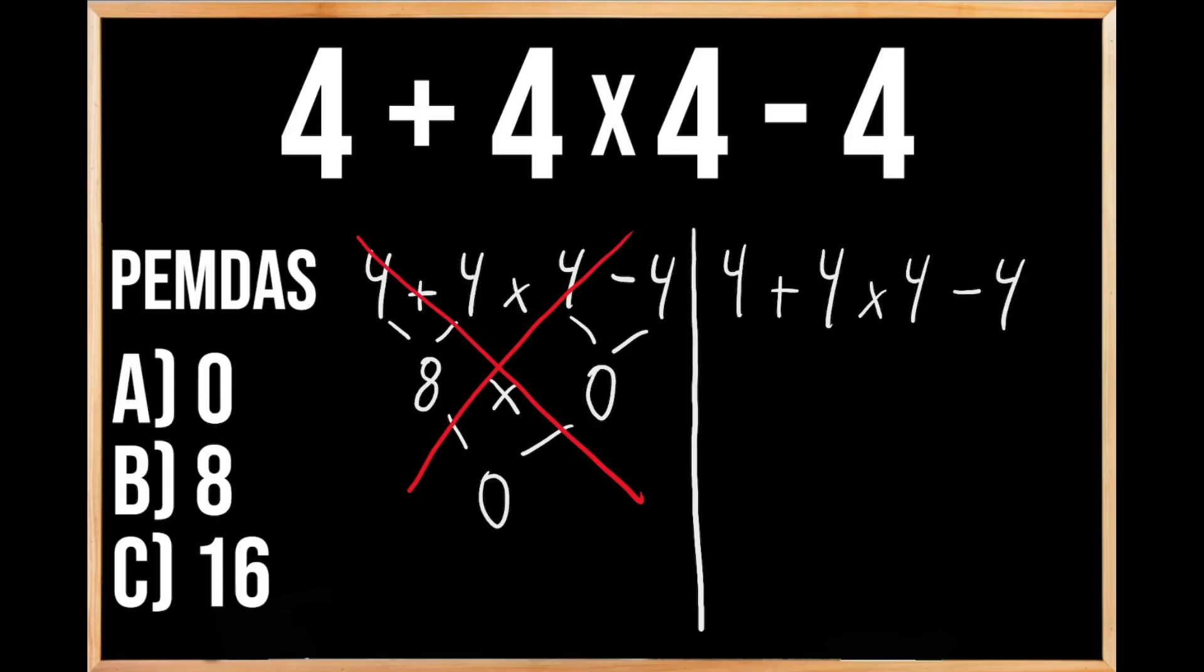which stands for the order of priorities when solving problems just like this. The P in PEMDAS stands for parentheses, and the E stands for exponents, and since we don't have either one of those, we're going to move on to our next priority of multiplication.